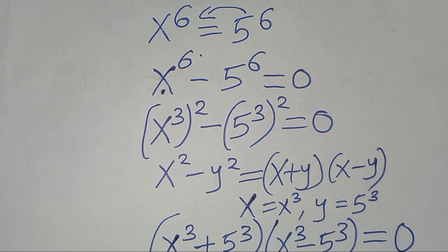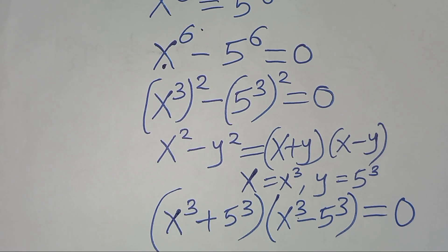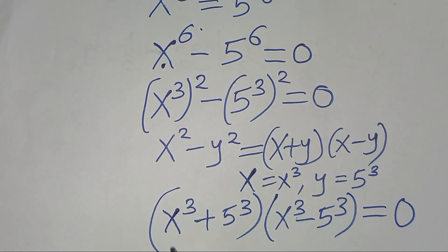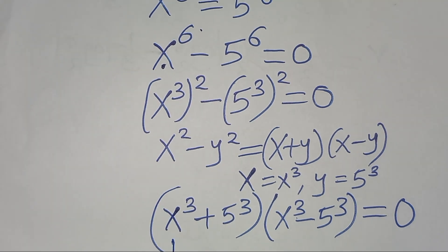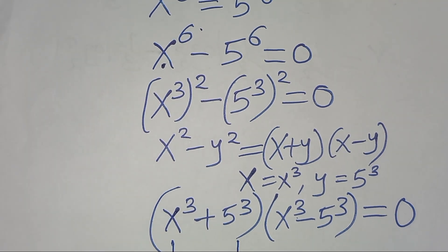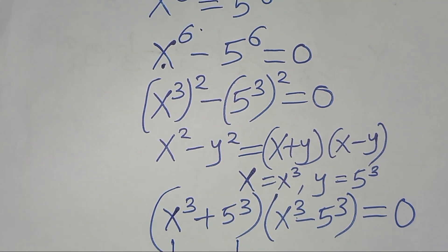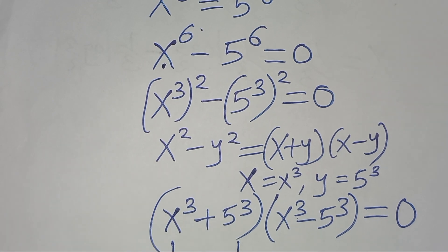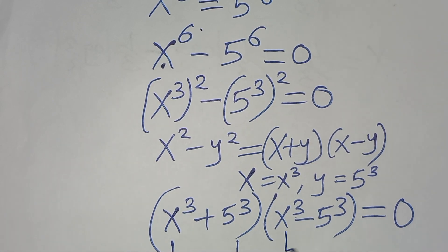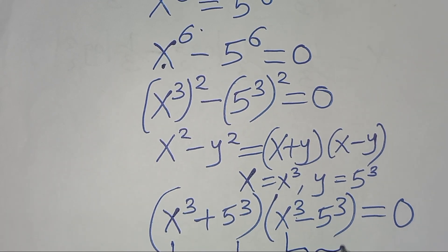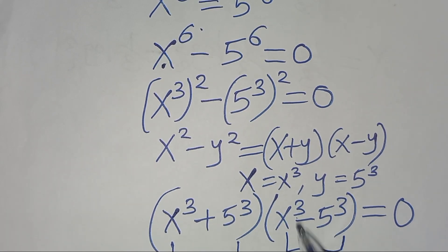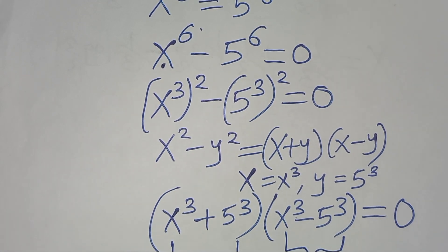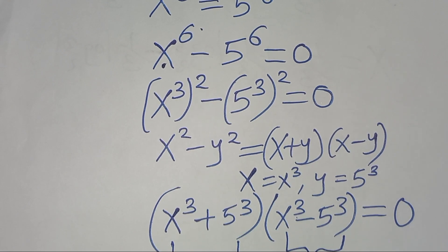Now we have two parts. The first part, x³ plus 5³, is the sum of two cubes in the form a³ plus b³. The second part, x³ minus 5³, is the difference of two cubes in the form a³ minus b³.